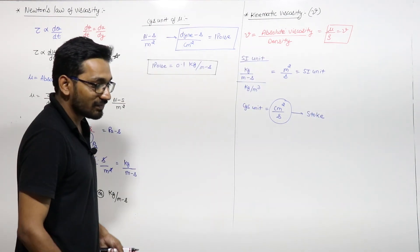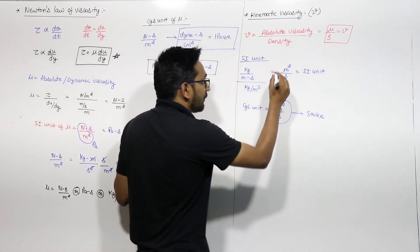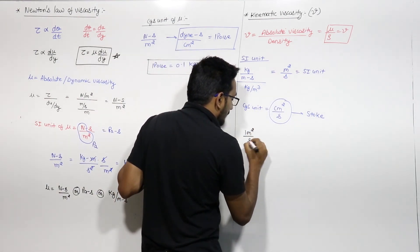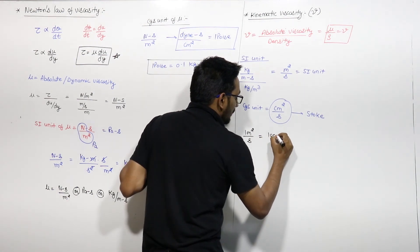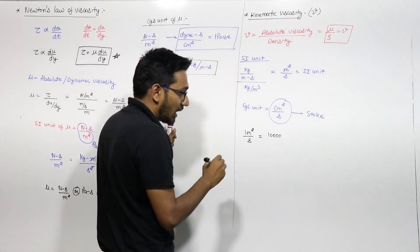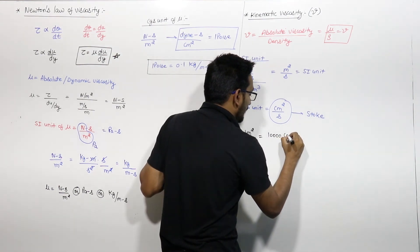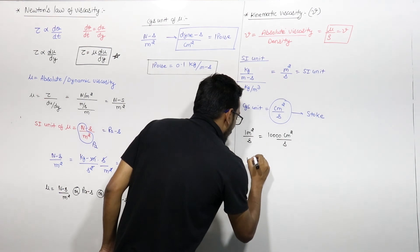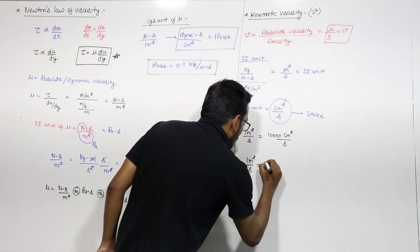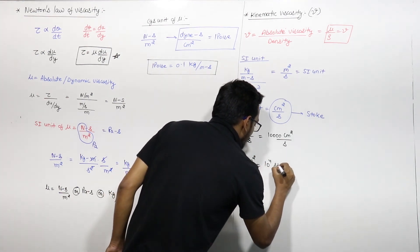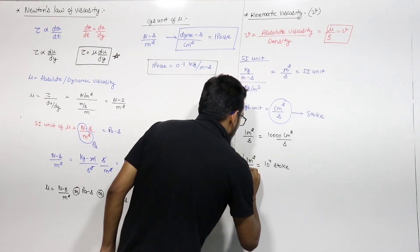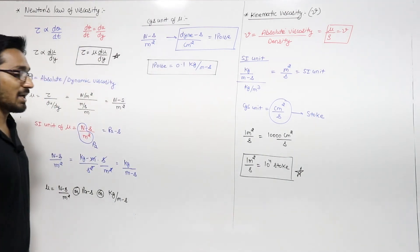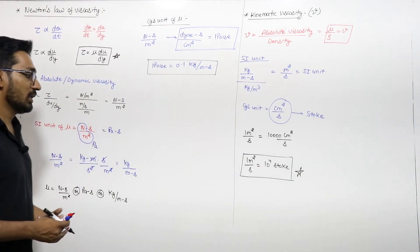The conversion between SI and CGS units of kinematic viscosity: one meter square per second equals 10 to the power 4 centimeter square per second, so one meter square per second equals 10 to the power 4 stokes. This is the CGS unit of kinematic viscosity.